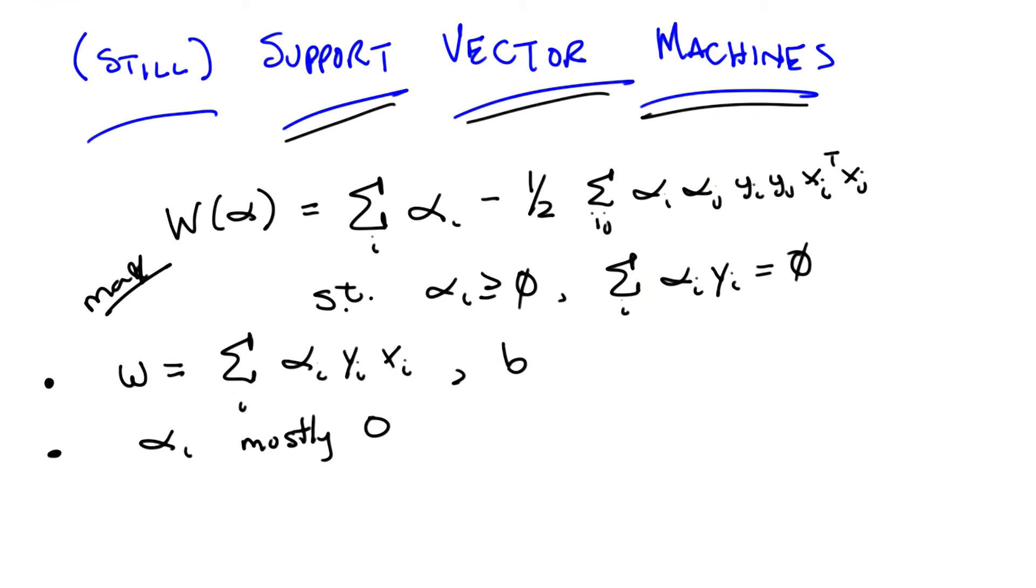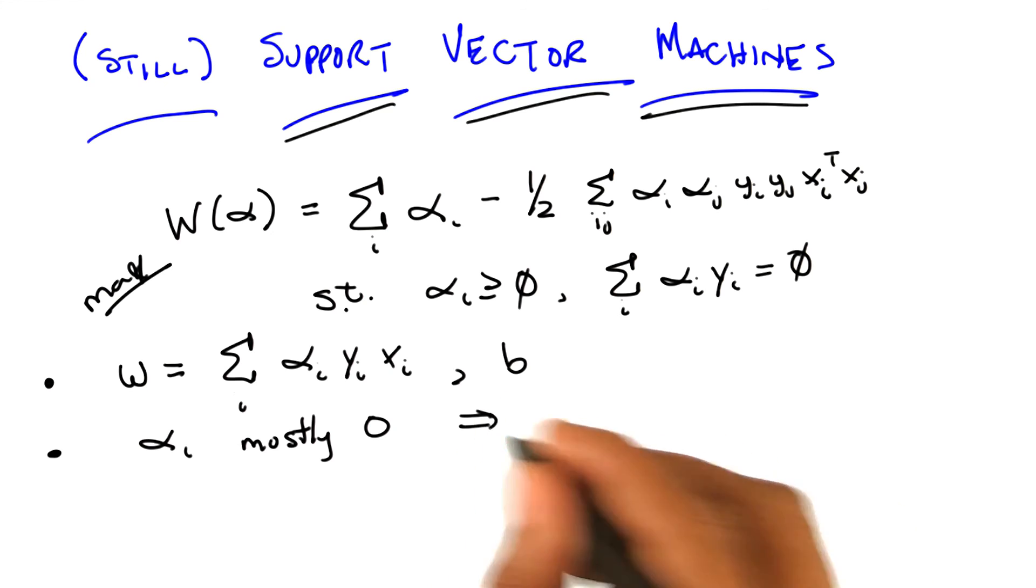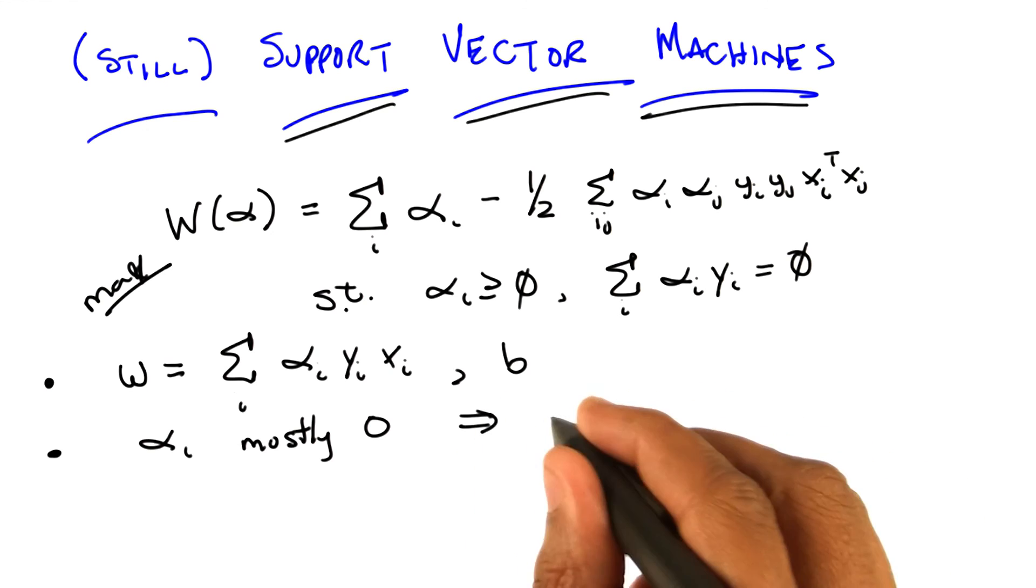Oh. So the data points for which the corresponding alpha is non-zero, those are the support vectors? Yes, those are the ones that provide all the support for w. So knowing that w is the sum over a lot of these different data points, and their labels, and the corresponding alphas, and that most of those are zeros, that implies that only a few of the x's matter.